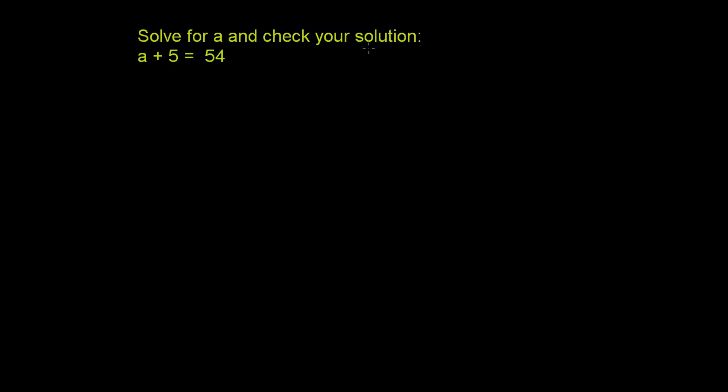Solve for a and check your solution. We have a plus 5 is equal to 54. Now all this is saying is that we have some number, some variable a, and if I add 5 to it, I will get 54.